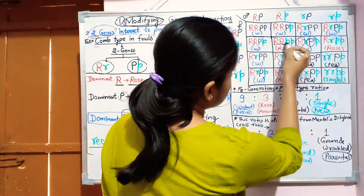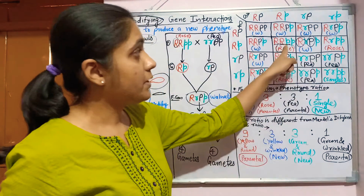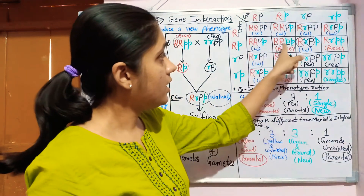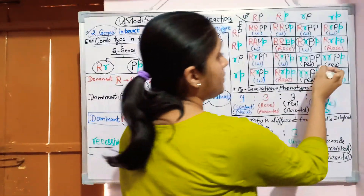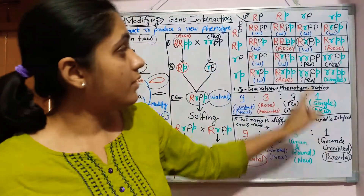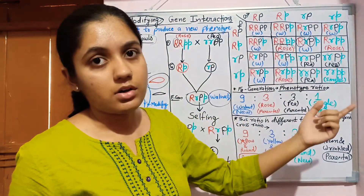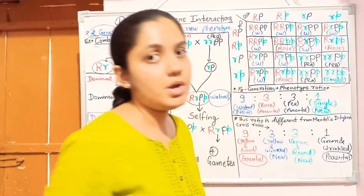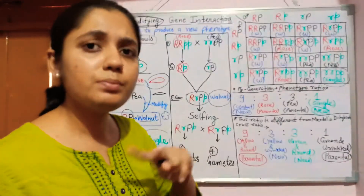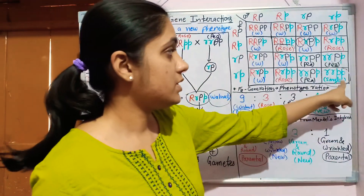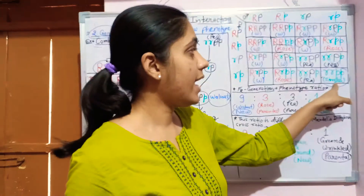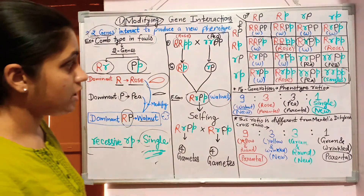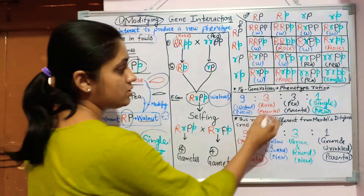The rose type comb is produced only when the dominant allele of capital P is absent. The pea type is produced only when the dominant allele capital R is absent. When all dominant alleles from both genes are absent and only recessive alleles are present, then the single type comb is present. So in the F2 generation, the phenotypic ratio is 9:3:3:1.